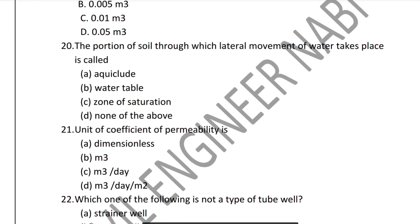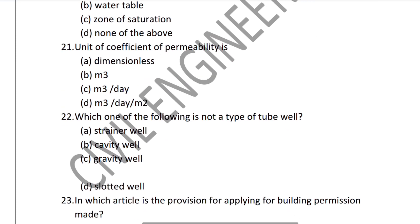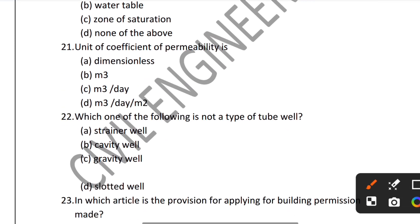Question 21: What is the unit of coefficient of permeability? It is not dimensionless. The unit of permeability is meter cube per day per meter (m³/day/m). That is the correct answer.